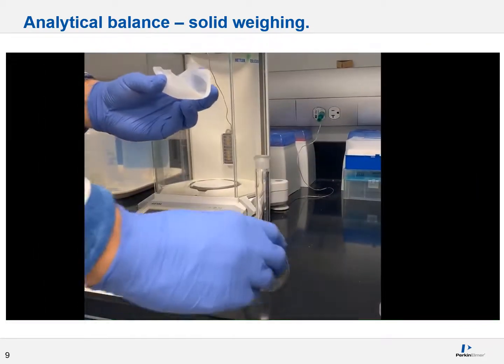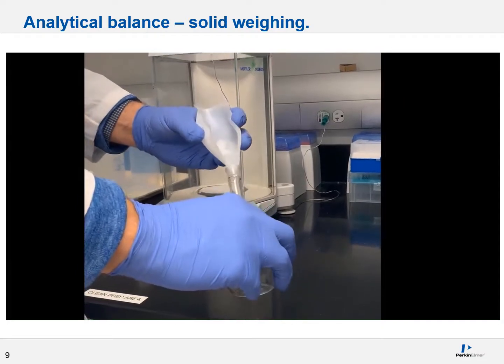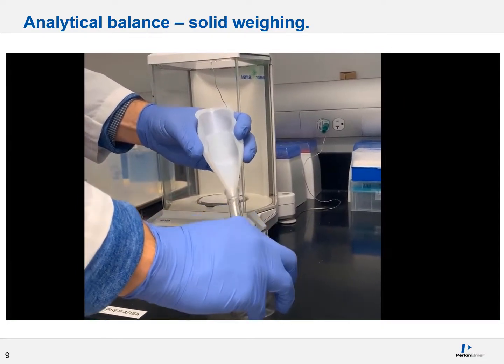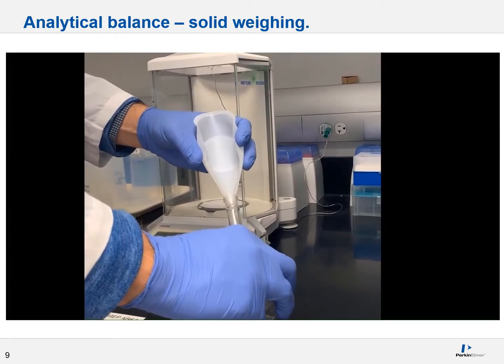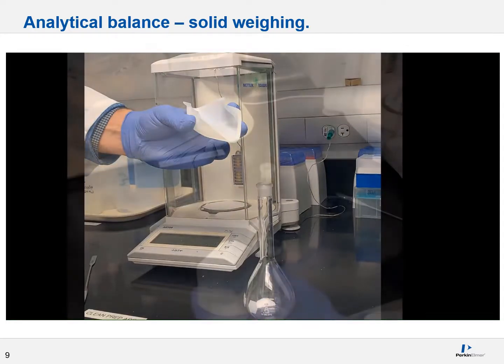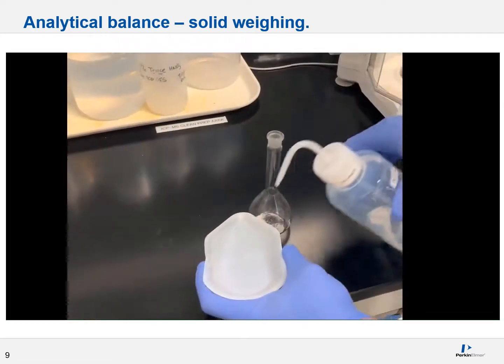Now remove the weigh boat or paper and carefully transfer your salt or chemical to a desired vessel, such as a volumetric flask in this instance. Make sure all your salt is transferred. However, there's a chance that there's still some residual salt left behind. As such, you may want to quantitatively transfer or rinse out the weigh boat as follows.